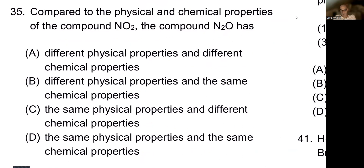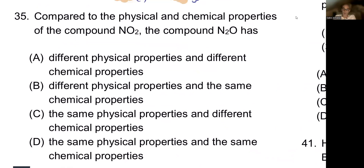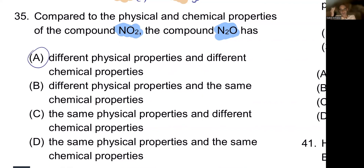Next question compares the physical and chemical properties of NO2 and N2O. They both have nitrogen and oxygen, but they're not the same chemical. They might have similar interactions, but there's no way to know because they're completely different compounds. Although both have three atoms each, they have different ratios of nitrogen and oxygen.